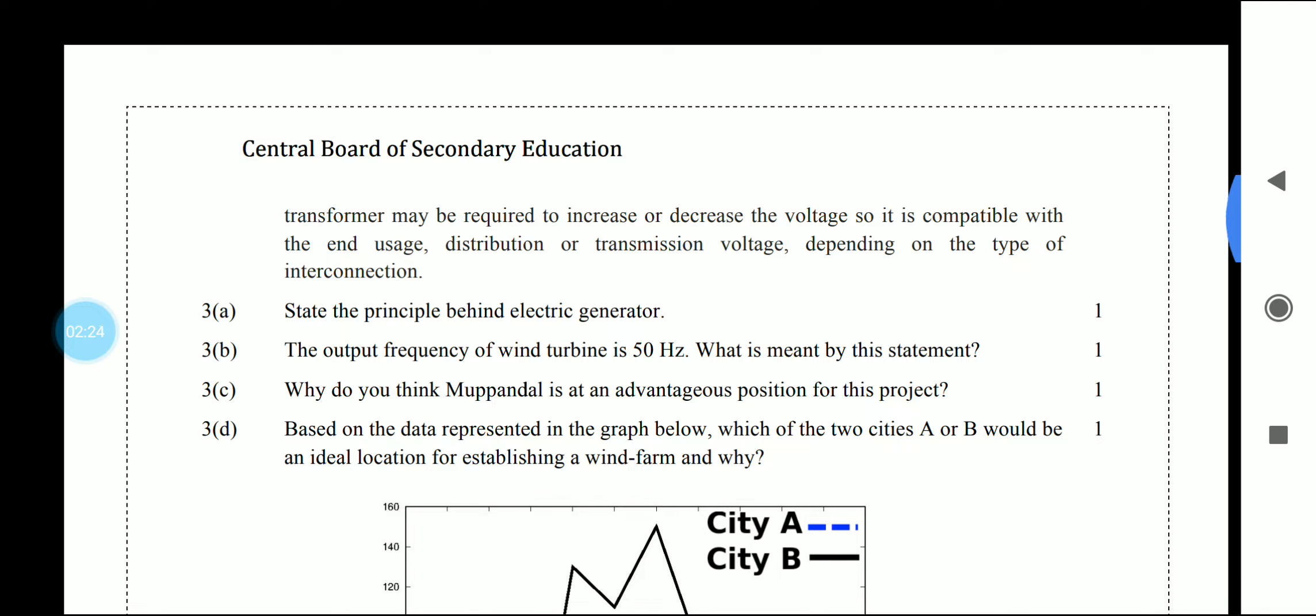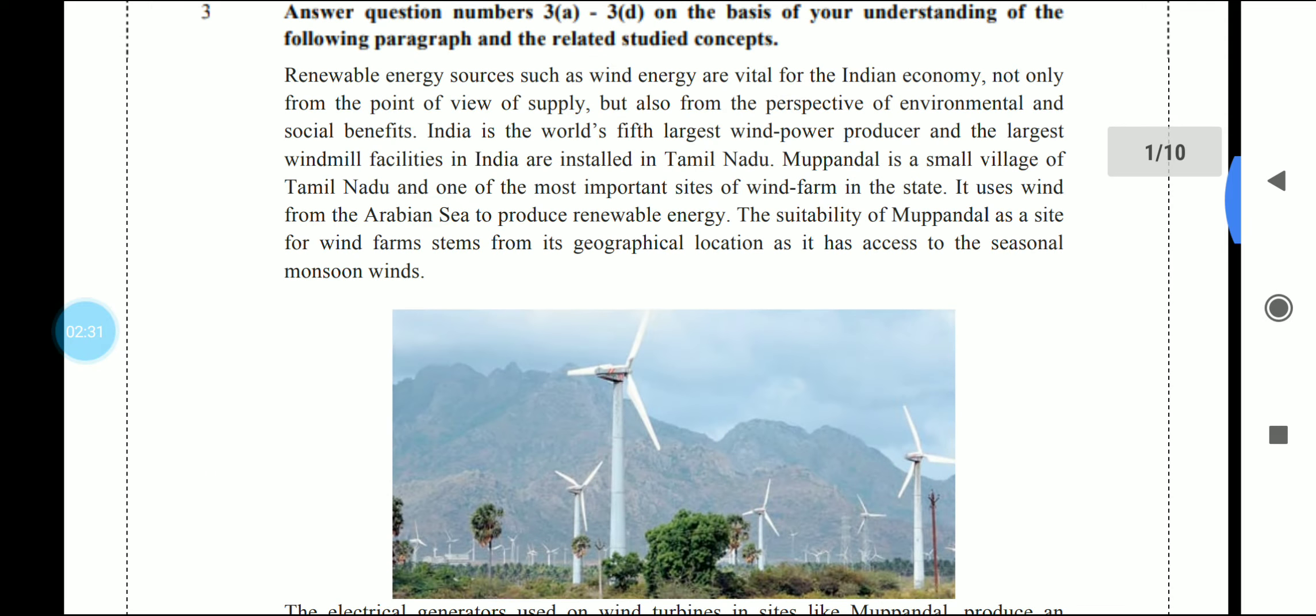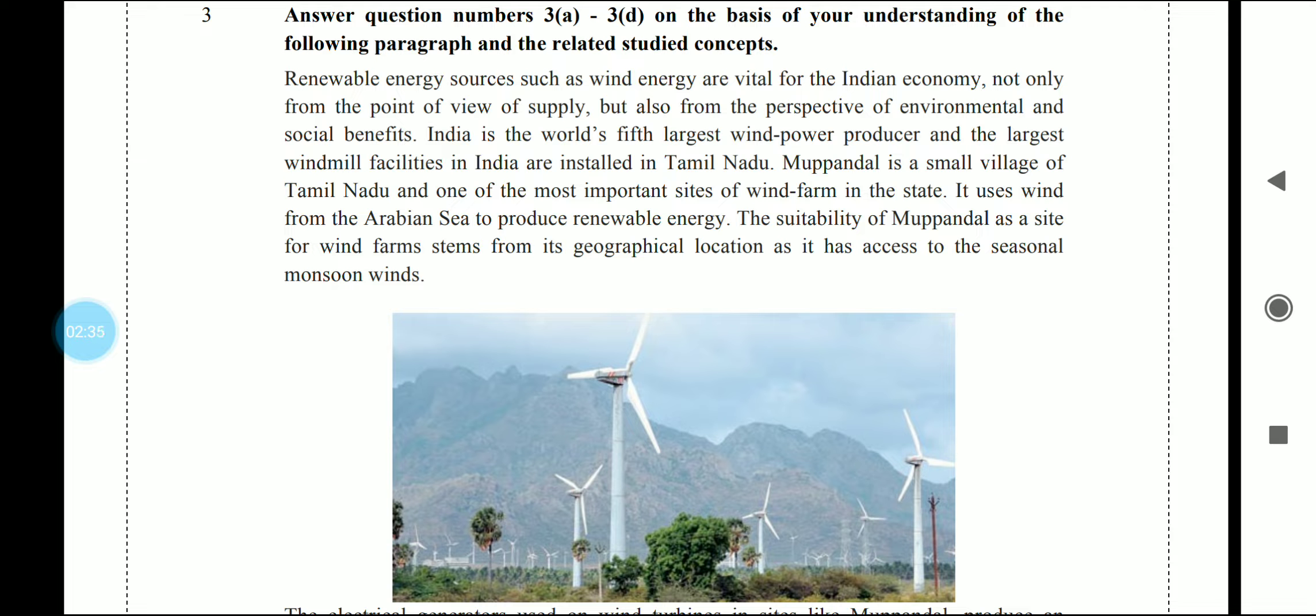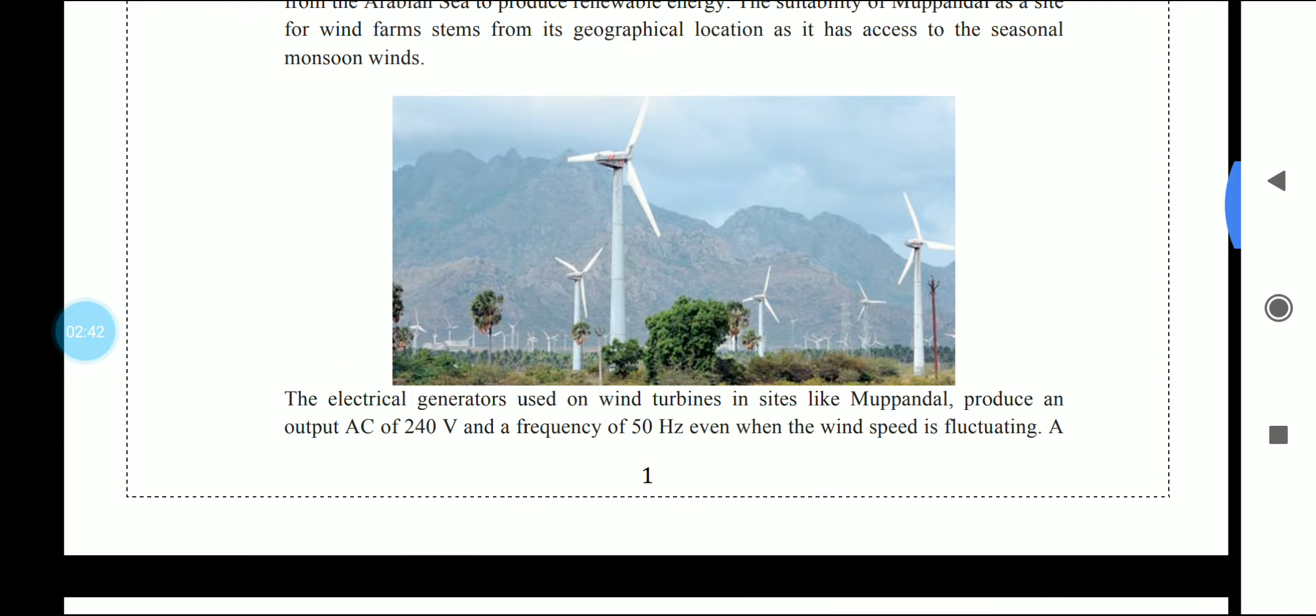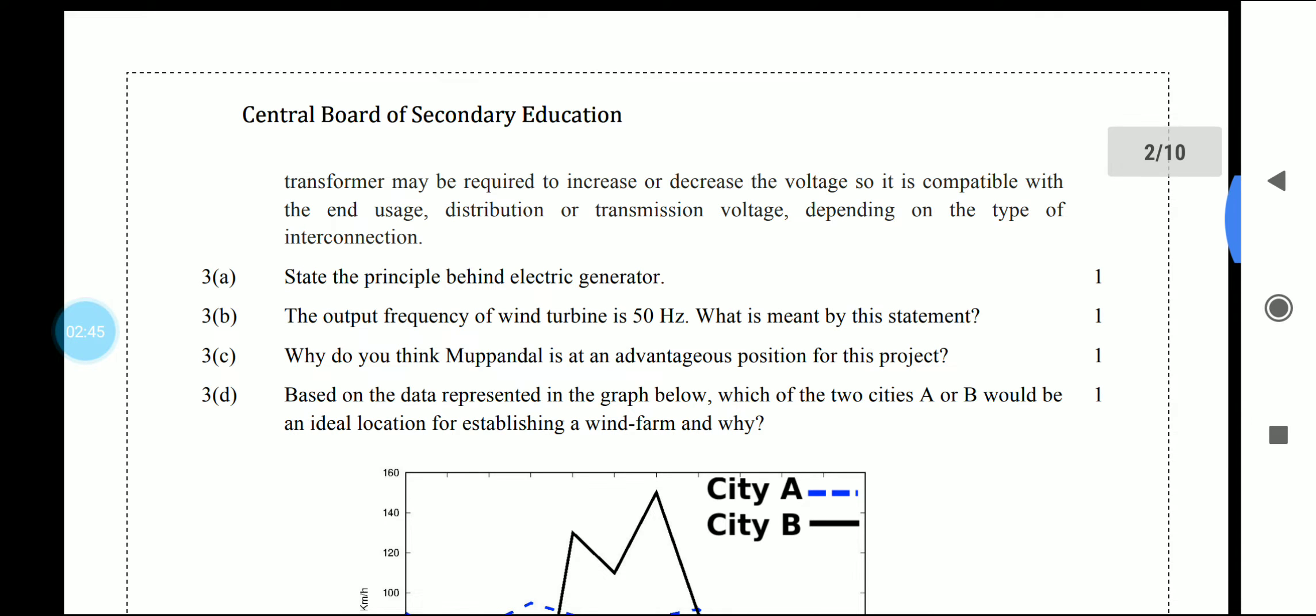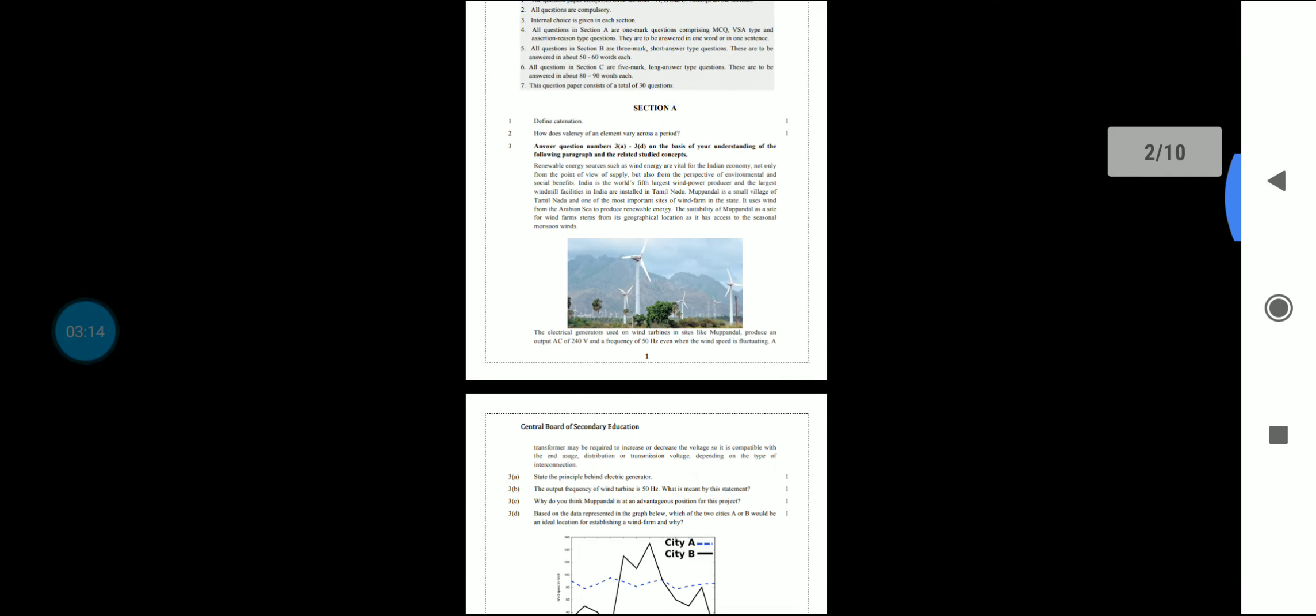The third question has four parts. In this section, you have a paragraph-based question. We have to study the concept of renewable energy sources. A whole paragraph is written, and we have to read it. First, they ask about the principle behind electric generator. If you have read the magnetic effect of electric current, you can simply answer it. Second question is about the output frequency of wind turbine. Then, why do you think Mupandal is at an advantageous position for this project?